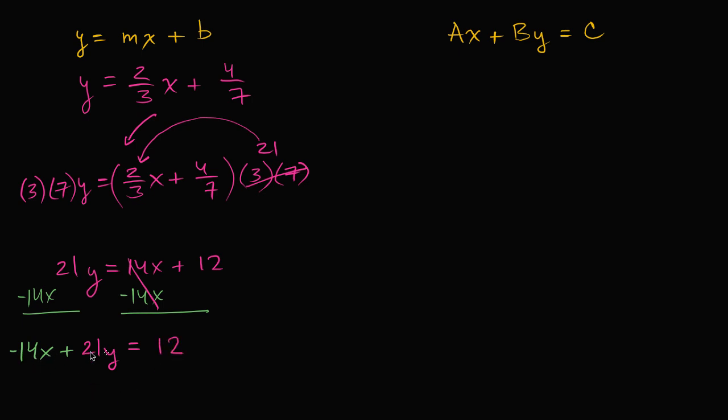Now let's see, am I done? Do these share any common factors? Do 14, 21, and 12 share any common factors? Let's see, 14 is divisible by 2 and 7. 21 is divisible by 3 and 7. 12 is divisible by 2, 6, 3, 4. But all of these aren't divisible by the same number.